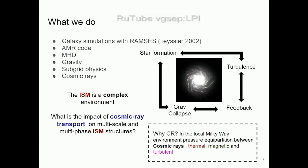What we're doing is a simulation of an isolated galaxy with the code RAMSES, which is an AMR code where we're solving MHD equations coupled with gravity and some subgrid physics to take care of the stars. Basically there are star particles that are born when gas collapses under certain conditions, and these stars become supernovae, which is where we inject the last ingredient: the cosmic ray fluid.